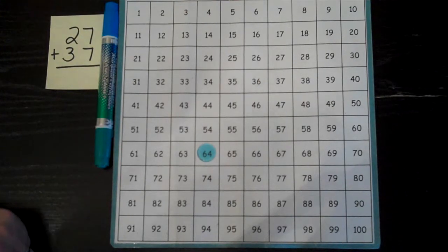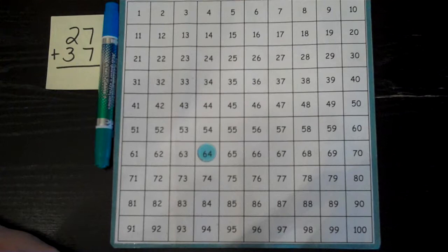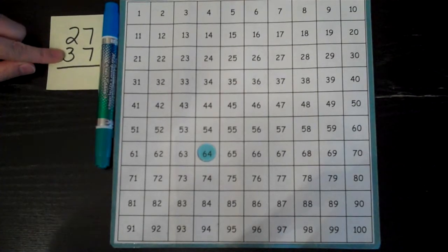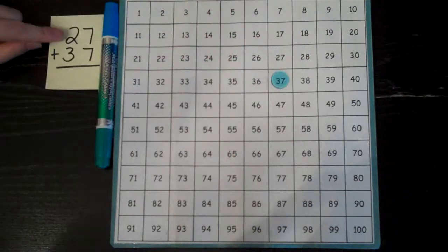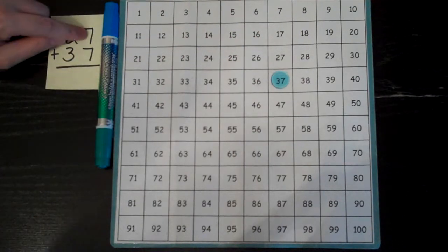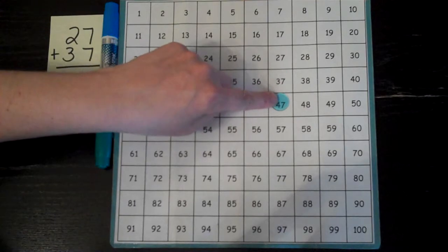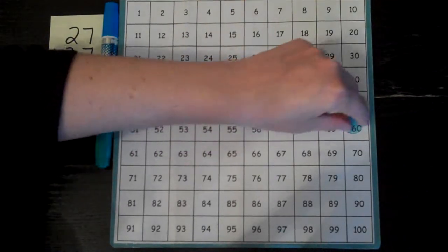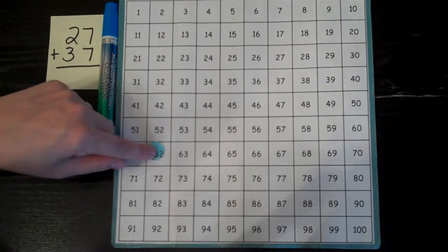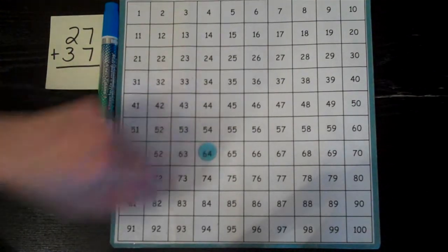I could try the other strategy and it should be a little bit faster. I'm going to start at 37. I'm going to count on by tens and then by ones: 10, 20, 21, 22, 23, 24, 25, 26, 27.